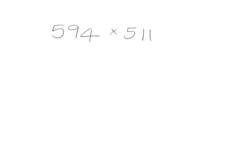Often we can use rounding to give us a good idea or an estimate of where our answer is going to be. If I want to know roughly what 594 times 511 is going to be, I can see 594 is quite close to 600 and 511 is quite close to 500.